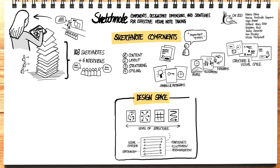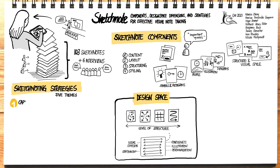Through our study, we gained insights into the strategies creators apply when drawing their sketchnotes, organized into five themes. The first set of strategies is about capturing ideas through concise text, quotes, and visuals. We also discuss the emergence of themes and crafting of explanatory illustrations.